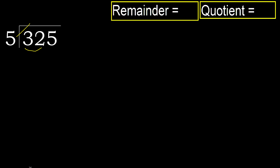5 multiplied by which number is nearest to 32 but not greater? 5 multiplied by 7 is 35, which is greater. 5 multiplied by 6 is 30, which is not greater. 32 minus 30 is 2, so the remainder is 2.